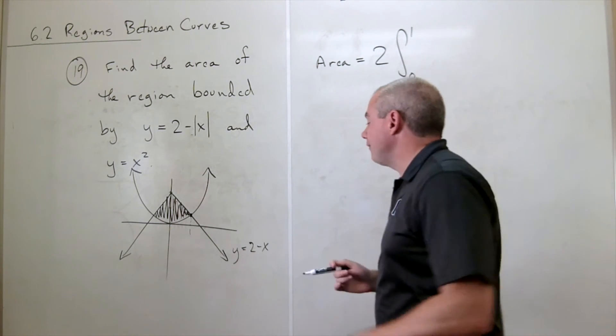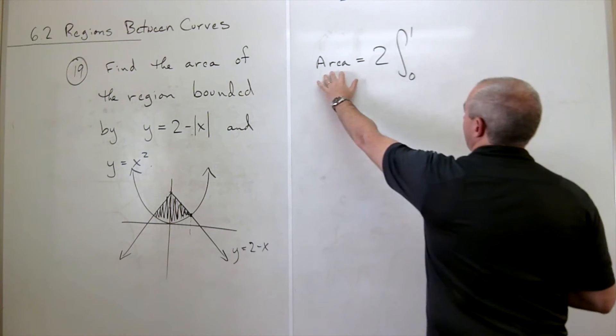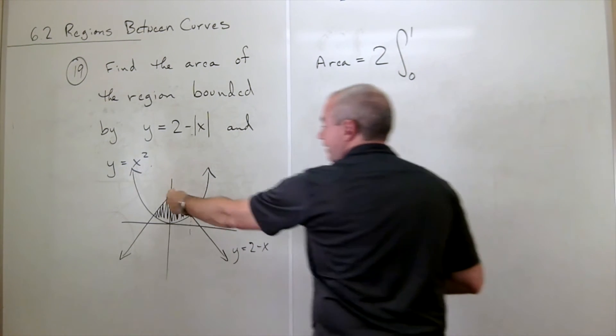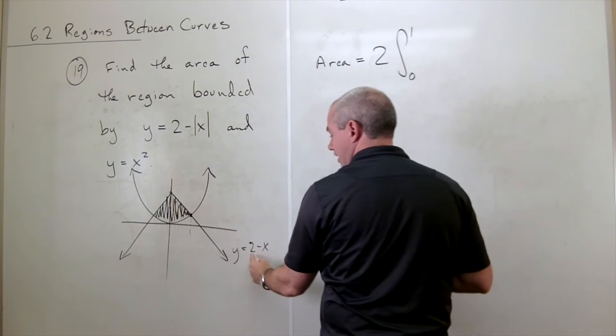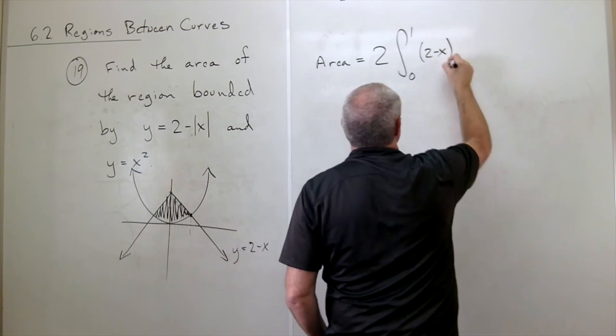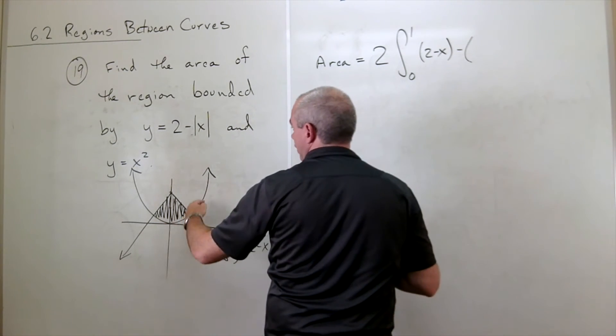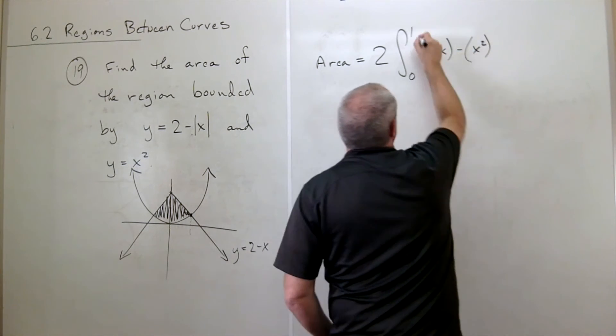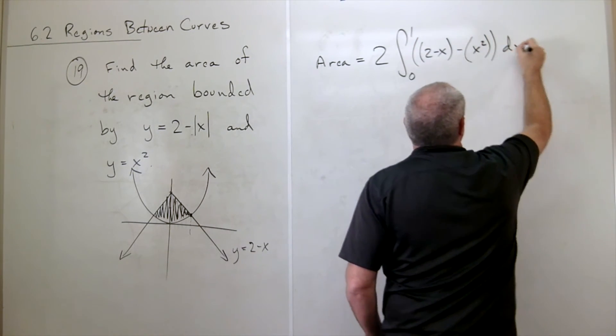If we do that, now we're talking about, we want the area of the top function minus the bottom function. In this case, the top function is the 2 minus x. So we've got 2 minus x minus the bottom function, which is x squared, all of that dx.